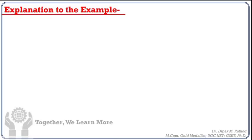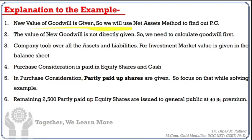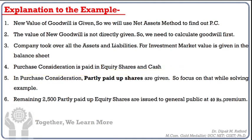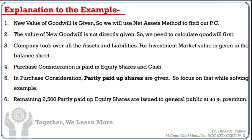Now let's understand what is given in the example. New value of goodwill is given, so we will use the net asset method to find out purchase consideration. The value of goodwill is not directly given, so we will calculate goodwill. The company took over all assets and liabilities; for investment, market value is given in the balance sheet. Purchase consideration is paid in equity shares — that is partly paid — and cash. Remaining partly paid up shares are issued to the general public at a 20% premium.